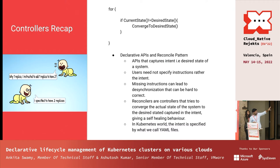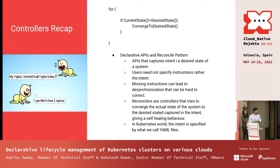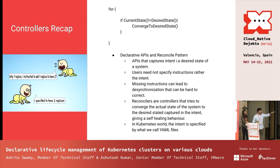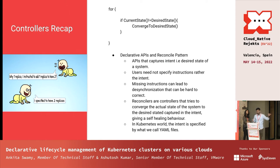The benefit of this reconciled pattern is that you do not instruct what to do — you specify how you want your system to look. For example, somebody says 'I want two replicas.' That instruction could get missed. But with declarative config, the controller checks the current state — say one replica — and sees the intent is two replicas, so it takes action to make it so.